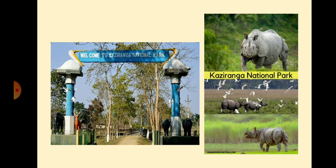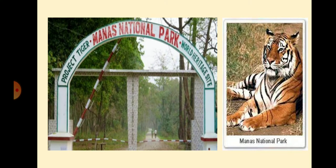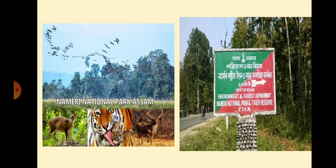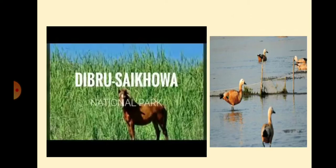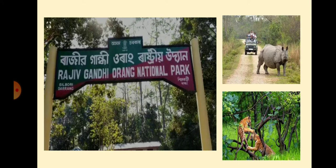Look here at the picture of Kaziranga National Park. Kaziranga National Park is famous for the protection of the one-horned rhinoceros. Manas National Park is famous for tiger reserve. Nameri National Park is also famous for tiger reserve, as well as wild birds and horses. Orang National Park is famous for rhinoceros and tigers.